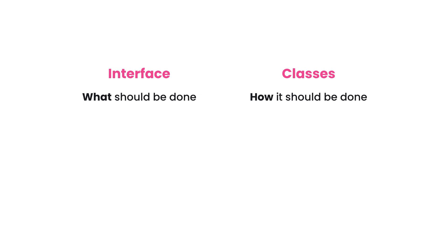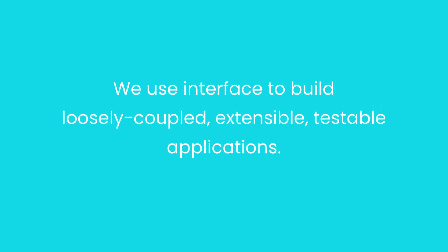So interfaces are about whats, and classes are about hows. With interfaces we can build applications that are loosely coupled and extensible. We can easily extend or replace various parts with minimal or zero impact on our application. We can also independently test these parts and make sure they're working. This is what we call unit testing, which is a topic for a completely different course. So this is the real purpose of using interfaces. Over the next few videos we're going to see these concepts in code.